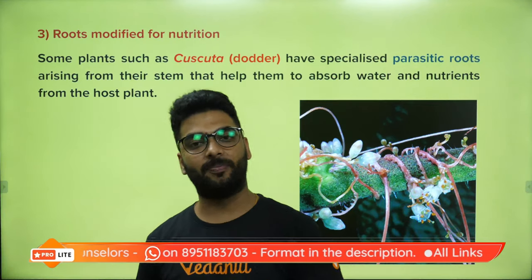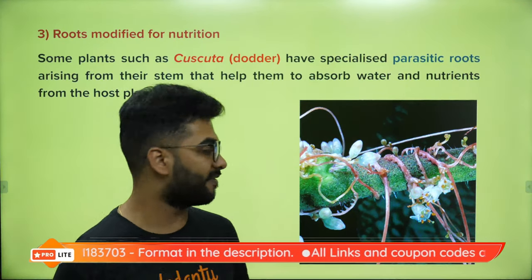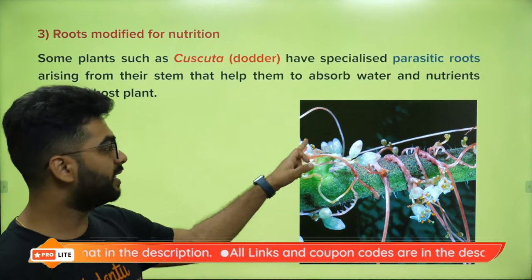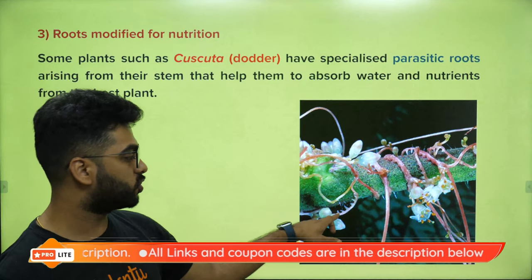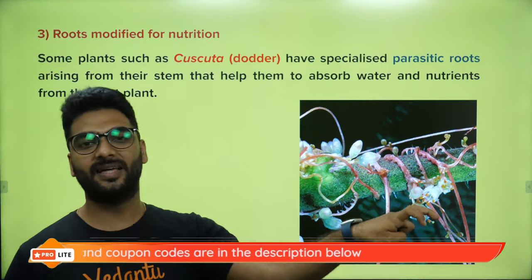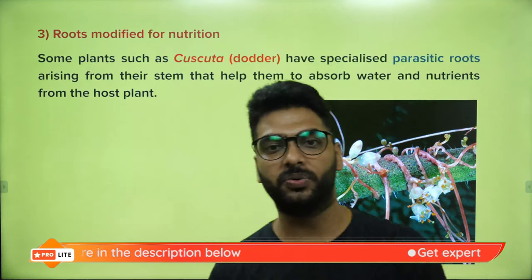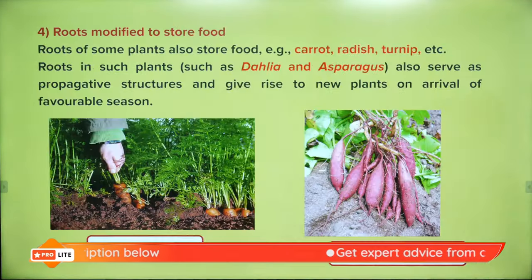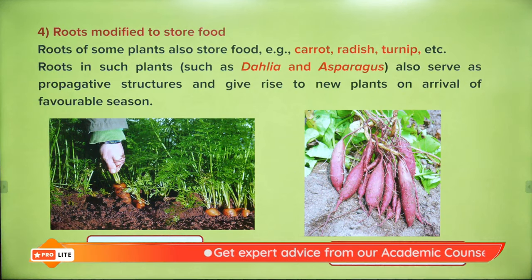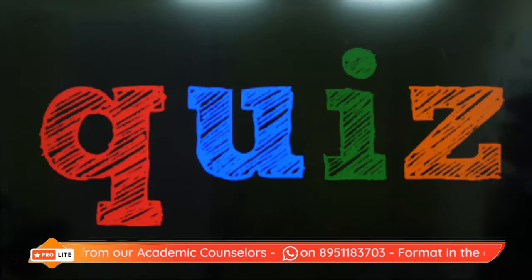Cuscuta has roots called haustoria. Cuscuta is a type of parasitic plant — it attaches itself with the help of its haustoria roots to a host plant and takes nourishment from it. You will learn about parasitic plants in the chapter Nutrition in Plants in grade 7 in detail. These haustoria are like hooks that attach to the host plant and suck nutrition from it. Food-storing roots are seen in carrot, sweet potato, turnip, radish, and beetroot.